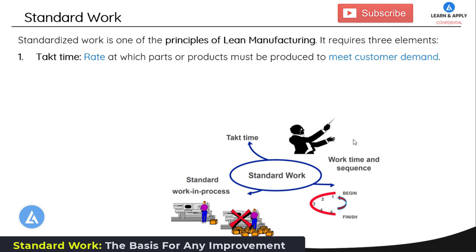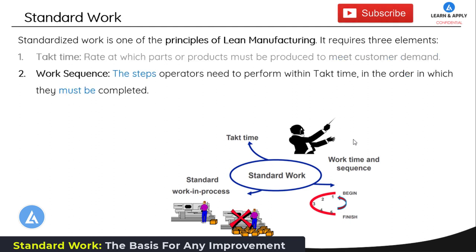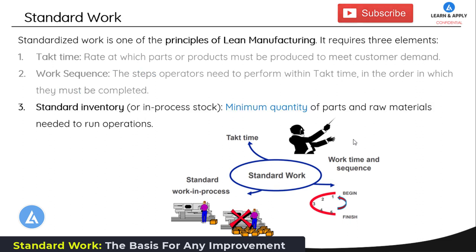The first element is takt time — the rate at which parts or products must be produced to meet customer demand. Takt time is a ratio of two concepts: available time and customer demand. The second element is work sequence — the steps an operator needs to perform within that time, in the order they must be completed. The third element is standard inventory or in-process work — the minimum quantity of parts and raw materials needed to run the operations.